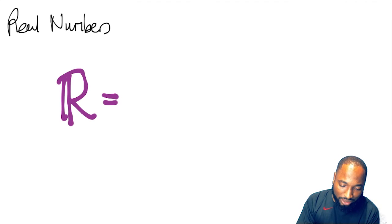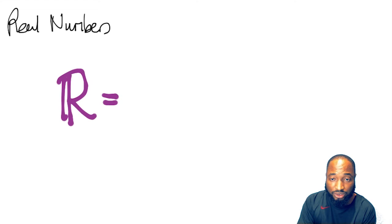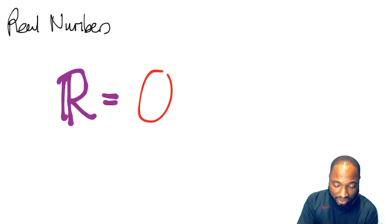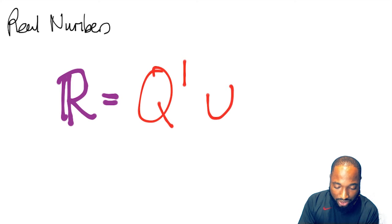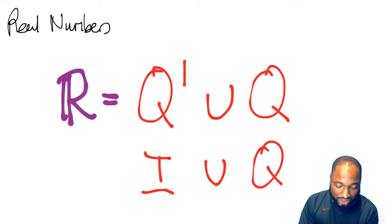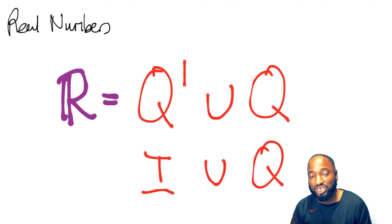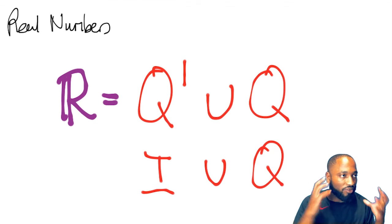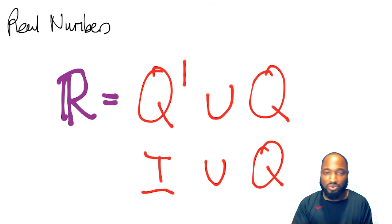Finally, real numbers. Real numbers include everybody—meaning you include irrational numbers union with rational numbers. Irrational numbers are sometimes denoted I. Real numbers are the combined set of irrational numbers like pi and square root of 2, and all rational numbers. Any number you can think of is a real number. That's it.